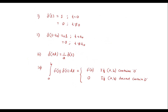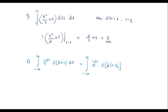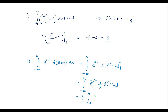Comparing with the scaling property δ(at) = (1/a)·δ(t), here a = 2. Therefore I can write the integral as the integration from −∞ to +∞ of e^(−2t)·(1/2)·δ(t − 1/2)dt. Taking the constant 1/2 outside the integral, this becomes (1/2)·∫_{-∞}^{∞} e^(−2t)·δ(t − 1/2)dt.